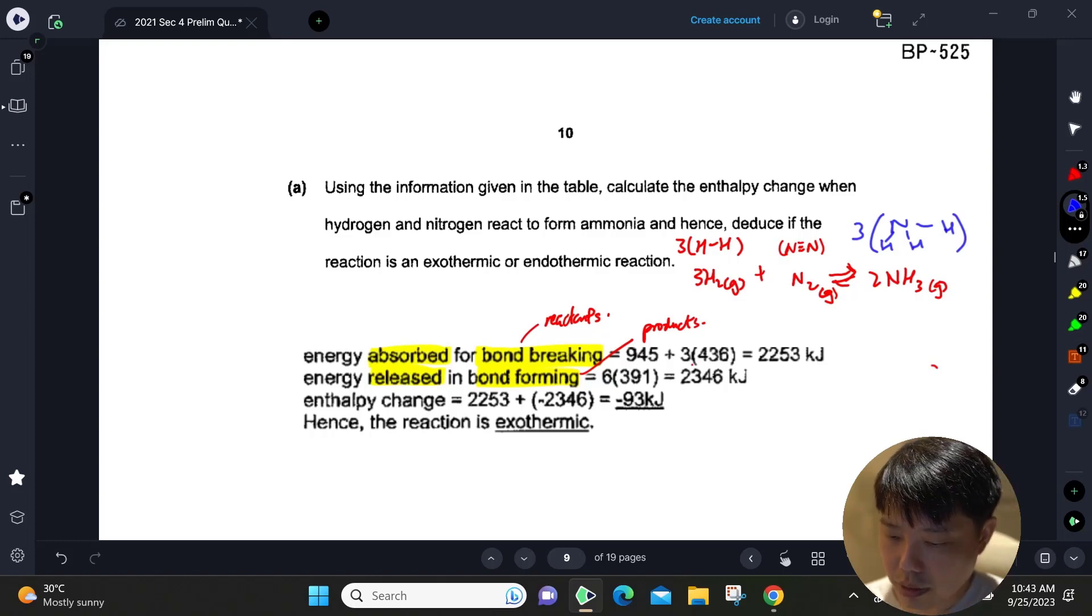All right, so you just take note of all the bonds that are supposed to be broken here: the three H-H bonds and one N triple bond N. The second is your energy released in the products. So you have six of the N-H bonds given here.